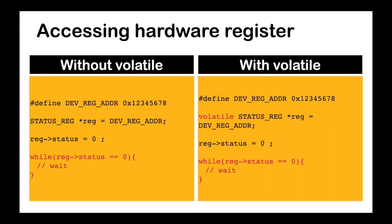So execution will be stuck in this while loop even though the status value was updated by hardware. In the second scenario, with the volatile keyword, the program is forced to read the status value directly from memory. Hence, it will exit the while loop once the hardware sets the status value to 1.